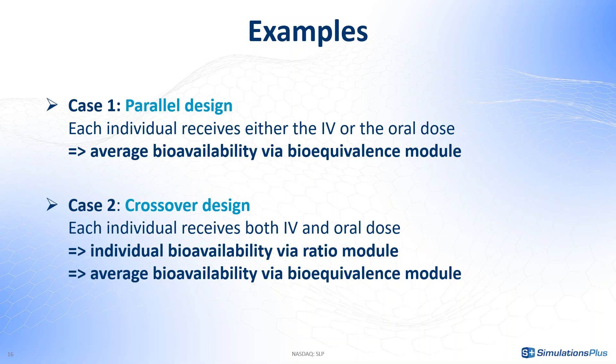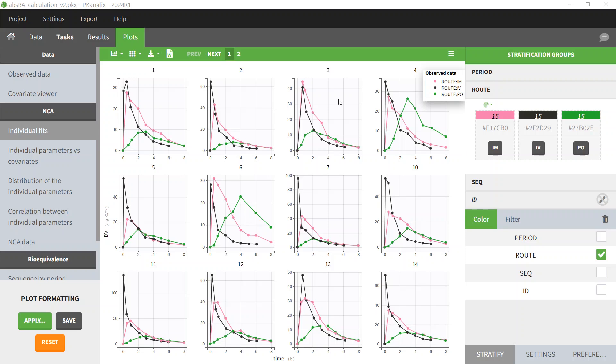Now let's see how to do the second example, which is a crossover design with several periods. You can have one or several sequences — what is important is to have several periods for each individual, one with the IV formulation and one with the extravascular formulation. In this second project I have loaded, each individual has three periods: one IV, one intramuscular (IM), and one oral (PO).